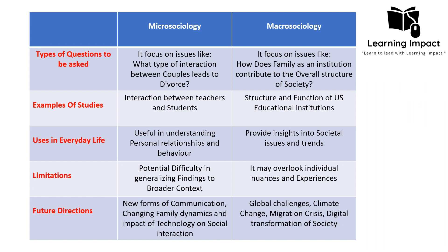Regarding types of research questions, micro sociology focuses on issues such as: What type of interaction between couples leads to divorce? Or how do individuals interact within the smallest social unit? Or how do two friends interact for a healthy friendship? These are the kinds of questions studied by micro sociology. Macro sociology, on the other hand, asks questions such as: How does the family as an institution contribute to the overall structure of society? — which is the study of the family institution in relation to society.